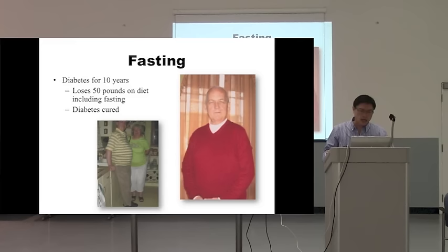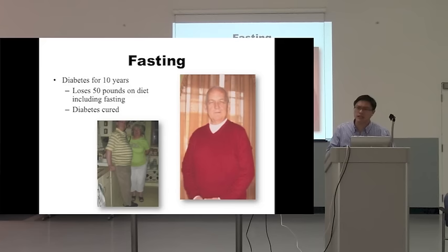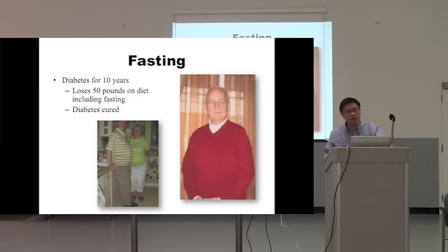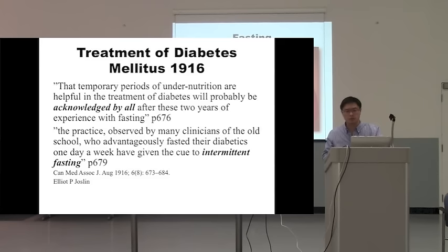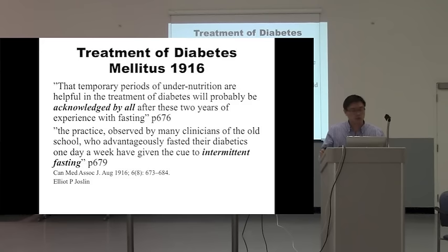Another way to reverse diabetes is fasting. I had a patient with diabetes for more than 10 years who started a regimen that included fasting. After losing 50 pounds he came off all his insulin, and a year and a half later he's still off everything and doing very well. So here's another case of someone who lost weight and whose diabetes went away — clearly not a chronic progressive disease, even after many years and even on 500 units of insulin.